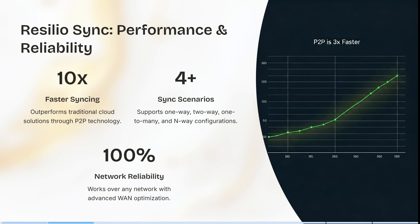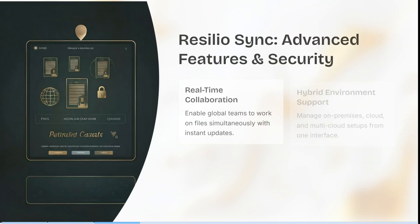It supports one-way, two-way, one-to-many, and N-way configurations, and it has 100% network reliability, so it will work over any network with advanced WAN optimization. It also offers real-time collaboration, enabling global teams to work on files simultaneously with instant updates. You can manage on-premises, cloud, or even multi-cloud setups from one single interface, and protect all your files with native AES-256 encryption during synchronization.